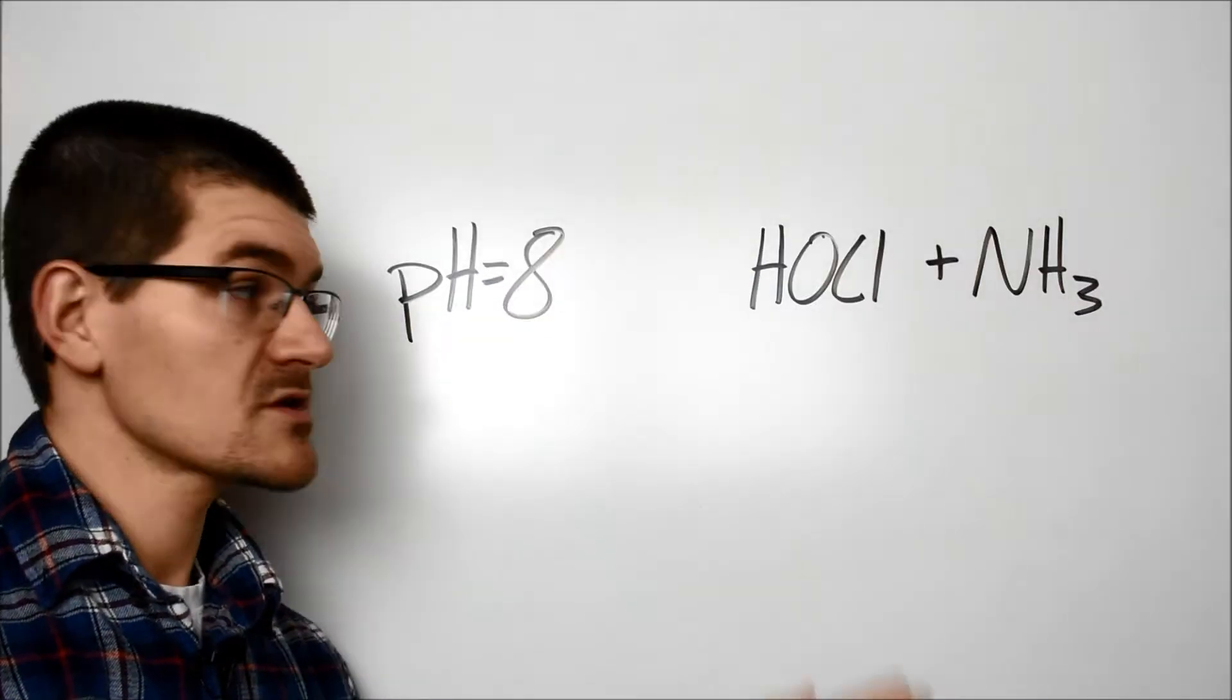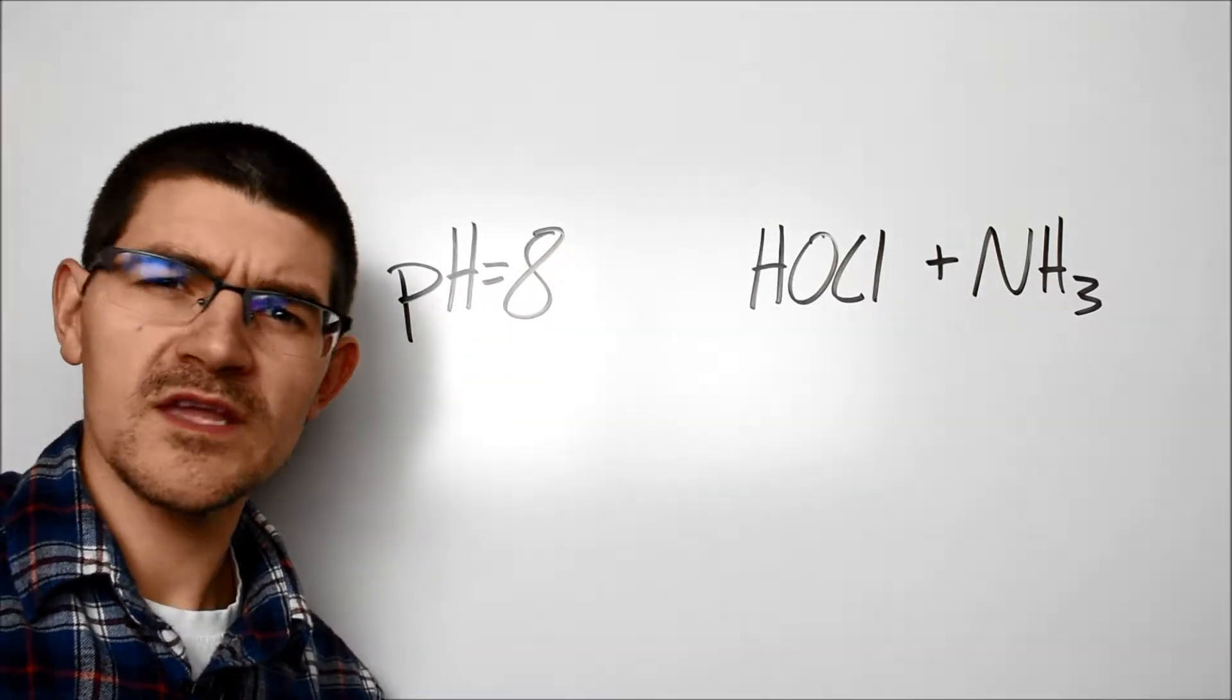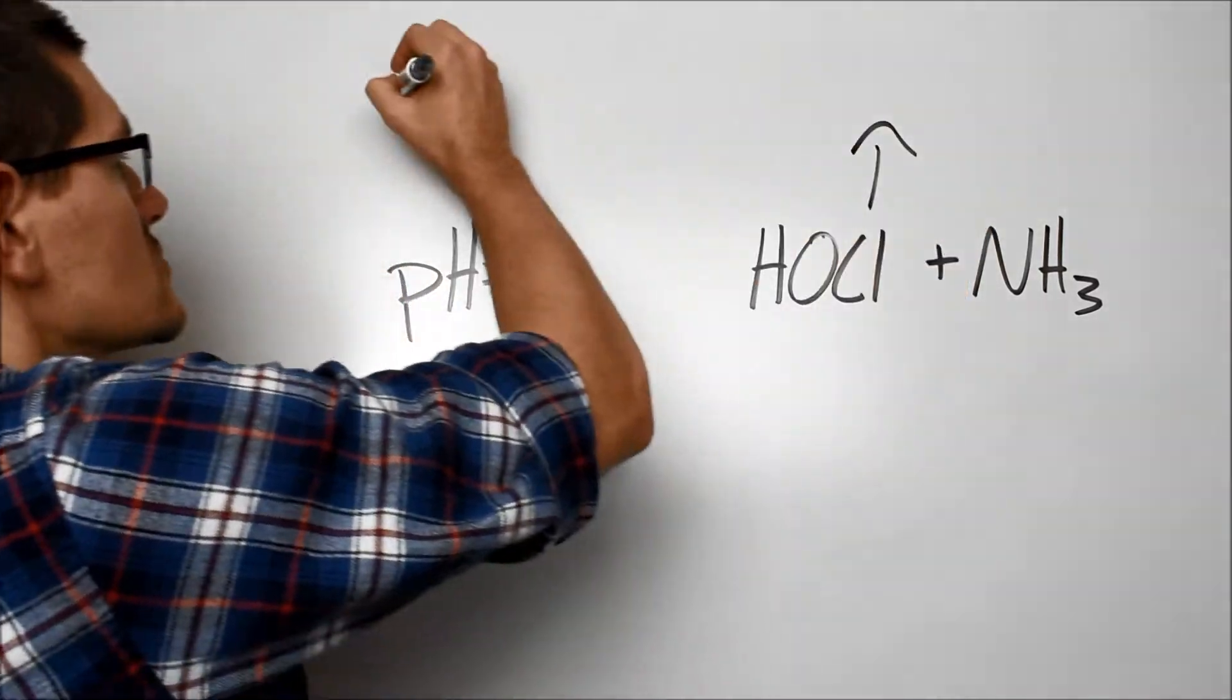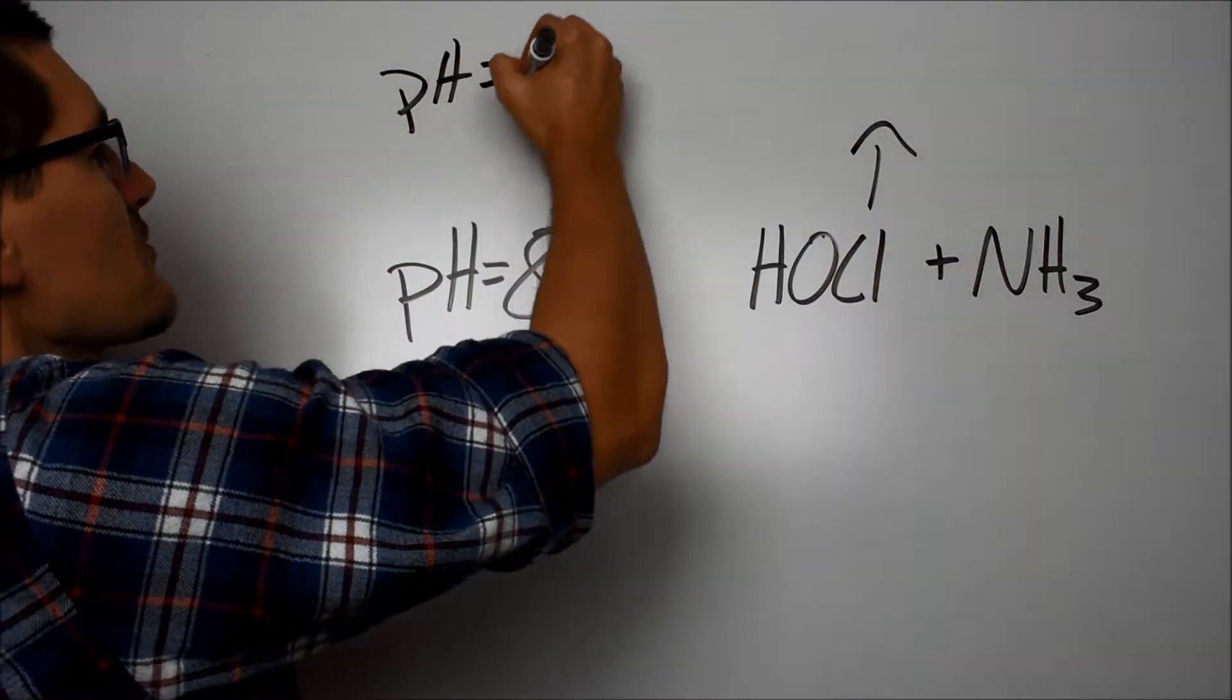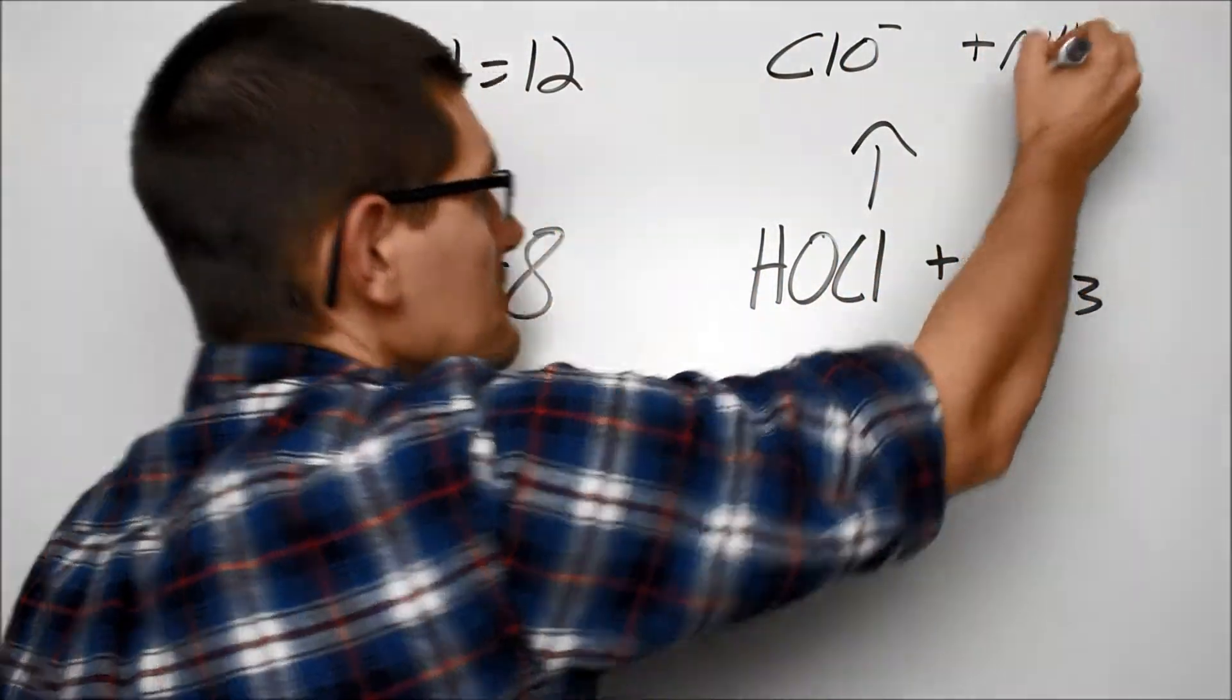We've just seen that the reaction between hypochlorous acid and ammonia happens best around a pH of 8. But what happens if we get too high or too low? Well, if our pH goes too high, let's say around 12 or so, we'll get too much deprotonation of that hypochlorous acid, and it won't be able to react with anything.